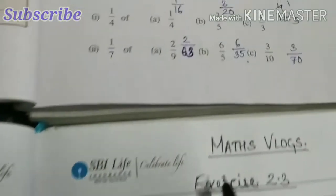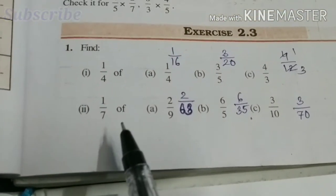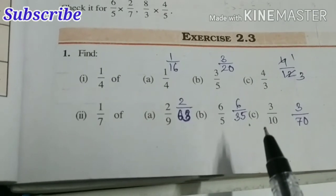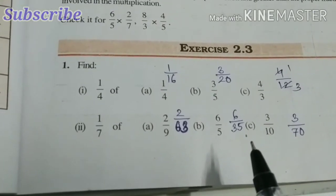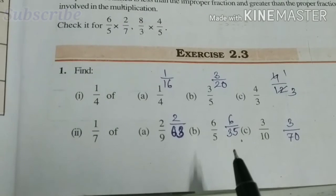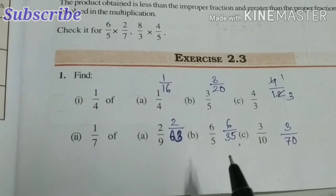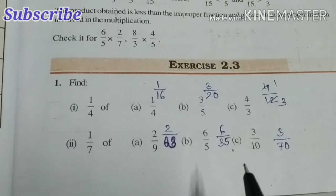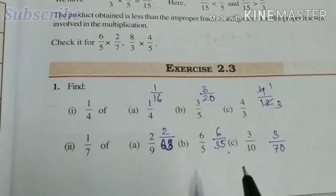Now the second part is also there: one-seventh of two-ninths, six-fifths, and three-tenths. This you can try, and if you have any doubt, ask in the comment box. Thanks for watching, please like, share, and subscribe to my channel.